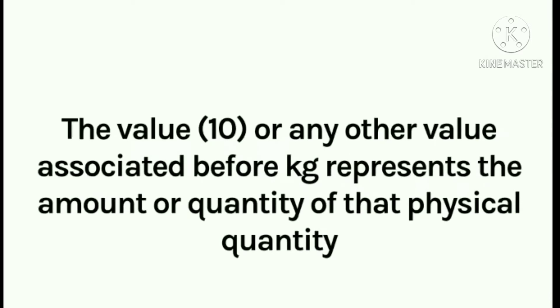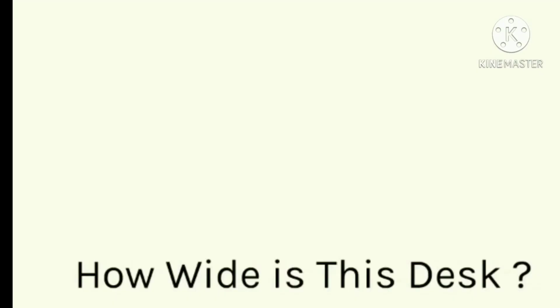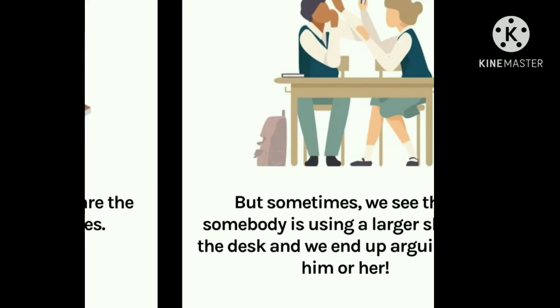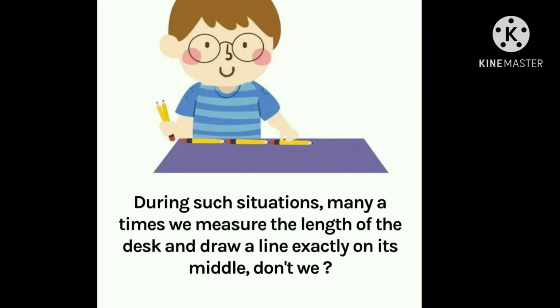The value 10, or any other value associated before kg, represents the amount or quantity of that physical quantity. For example, we say 12 kg, 13 kg, 15 kg — so the values 10, 12, 13, 50 represent the amount of quantity present when compared to the kilogram stone. In our school, we usually share the desk with our classmates, but sometimes we see that somebody is using a larger share of the desk, and we end up arguing.